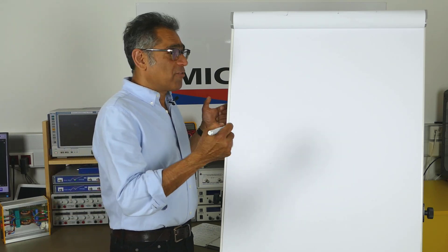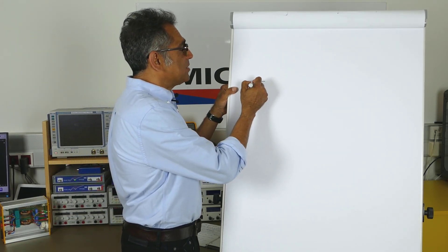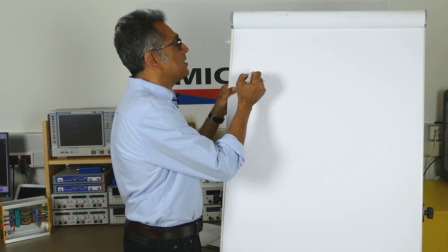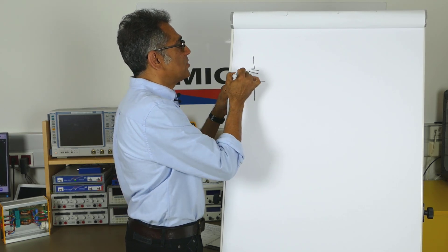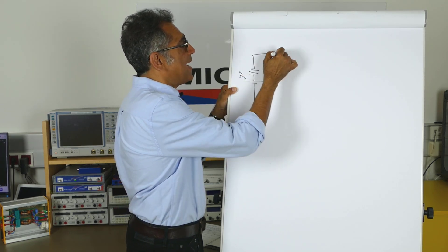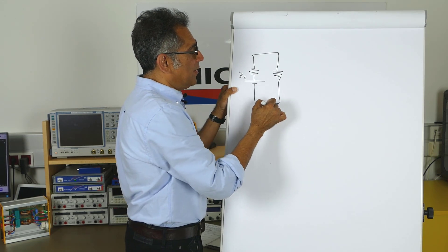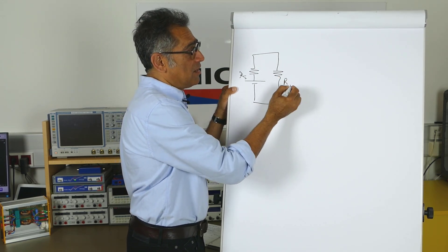Okay, so let us imagine that we have got a power source, for simplicity let us just make that a battery, that has got some internal resistance which we're going to call RS and we are trying to deliver power to our load resistance RL.